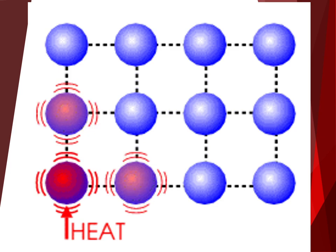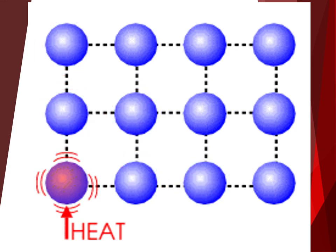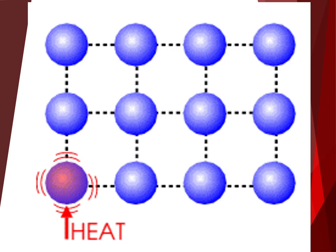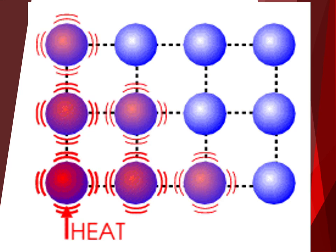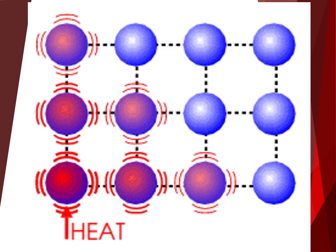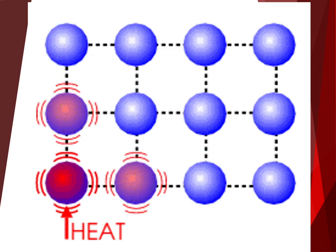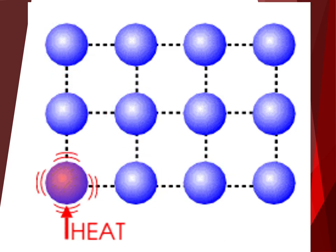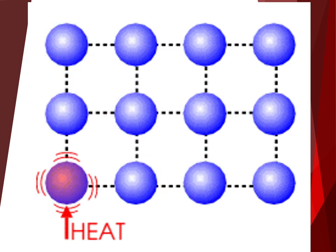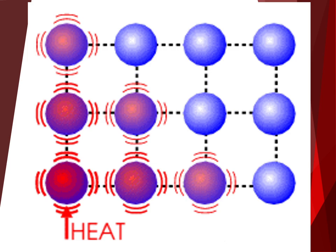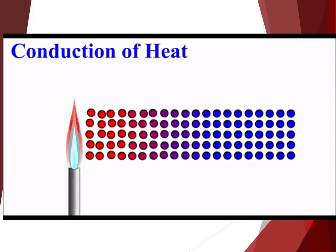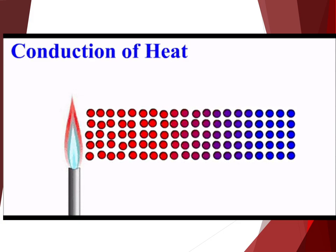In conduction, thermal energy is transferred between different areas of the same substance. Thermal energy, which is applied in one part of the substance, causes atoms and molecules in the substance to move more rapidly. This causes collisions with nearby particles, causing them to move faster as well. Further collisions transfer kinetic energy to particles farther away, and so forth. Thus, thermal energy spreads throughout the substance.